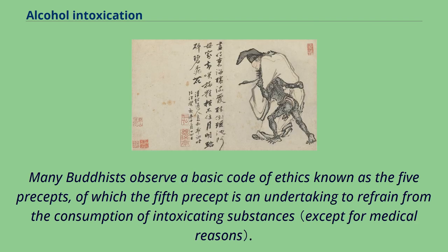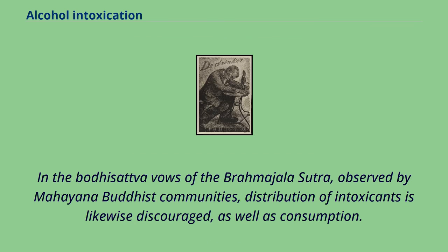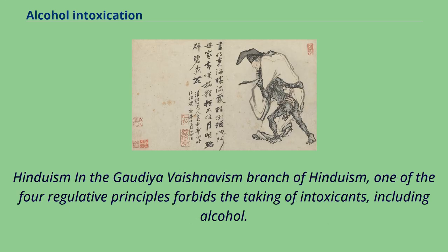Many Buddhists observe a basic code of ethics known as the Five Precepts, of which the Fifth Precept is an undertaking to refrain from the consumption of intoxicating substances. In the Bodhisattva Vows of the Brahmajala Sutra, observed by Mahayana Buddhist communities, distribution of intoxicants is likewise discouraged, as well as consumption. In the Gaudiya Vaishnavism branch of Hinduism, one of the four regulative principles forbids the taking of intoxicants, including alcohol.